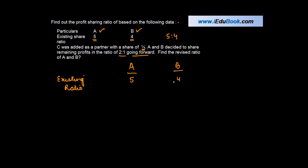If you have to convert this into fraction, we just do the sum of these two and divide it by that sum. 5 plus 4 gives you 9, so 5 by 9 and 4 by 9.